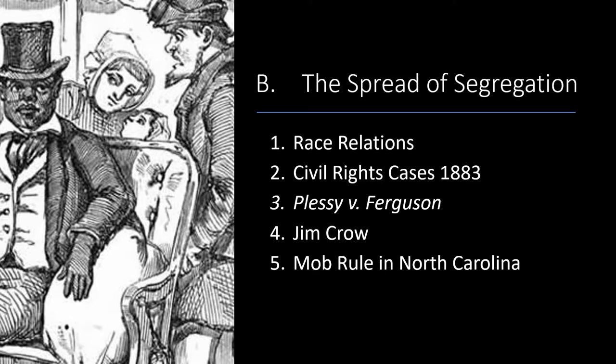Race relations remained fluid between 1877 and the early 1890s. Many African Americans voted and held office. Segregation was the rule in churches, schools, and some public places, but whites and blacks conducted business with each other and maintained cordial relations. With the Civil Rights Cases of 1883, the Supreme Court asserted that the 14th Amendment applied only to cases where the state infringed on the rights of African Americans — therefore, it was perfectly legal when an individual did so. New segregation legislation focused on railroads and providing separate but equal facilities.